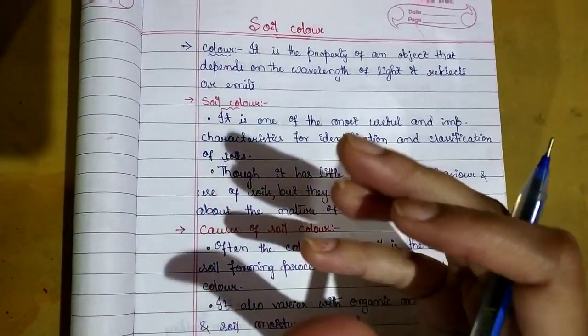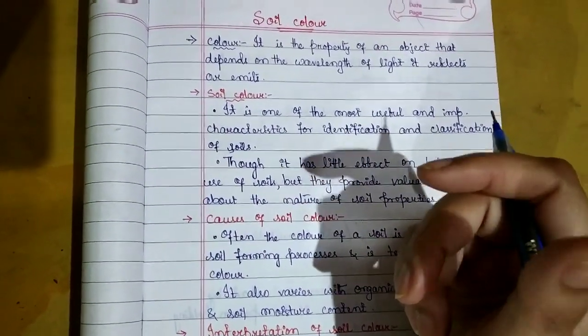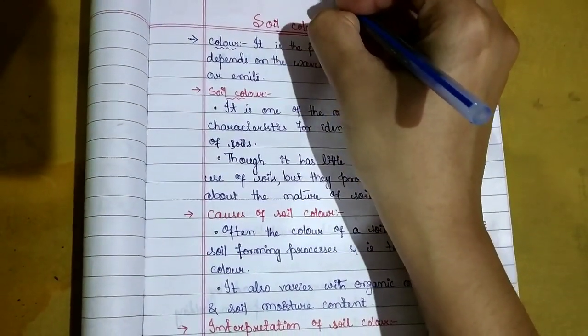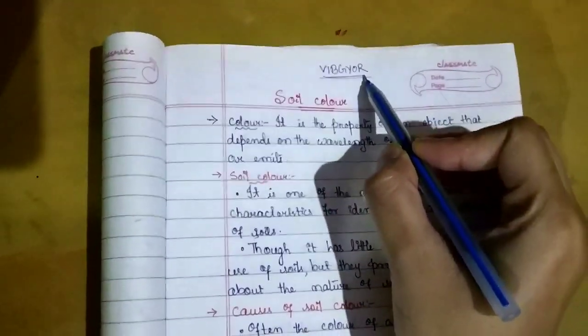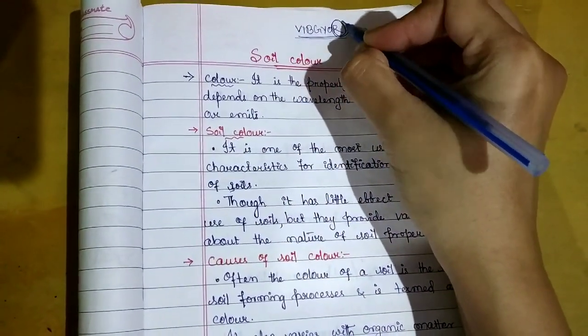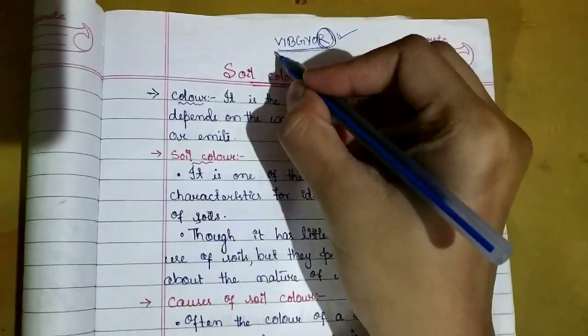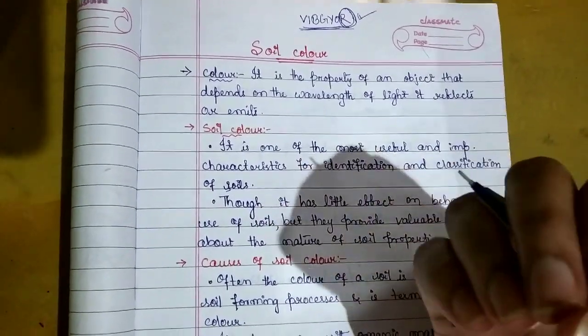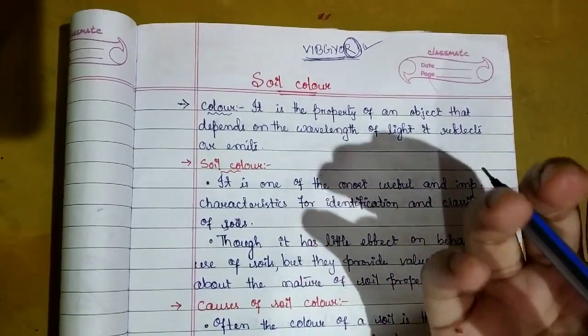Let me explain in simple terms. If you see something in red color, why can you see it? Because from the visible spectrum, that object emits only red color wavelengths and absorbs the rest of the colors. That's why we can perceive the object in red color.